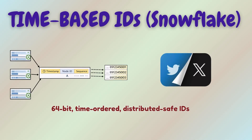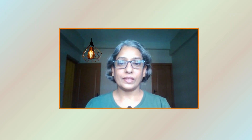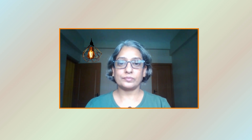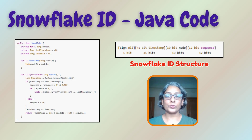Twitter created Snowflake to generate 64-bit, time-ordered, distributed-safe IDs. The structure looks like this. Let's implement a simplified Snowflake ID generator in Java. This is amazingly fast — millions of IDs per second per node.